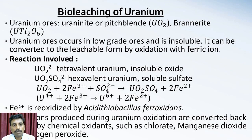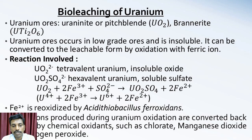The second part is bio-leaching of uranium. Uranium is extracted when insoluble tetravalent uranium is oxidized with hot hydrogen sulfide or ferrosulfate solution to make hexavalent uranium sulfate. It is an indirect process. Uranium ores are Uraninite and Brannerite. The pH required for this reaction is 1.5 to 3.5.